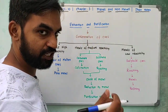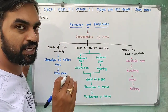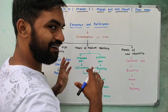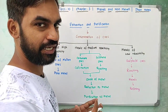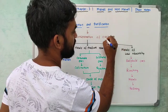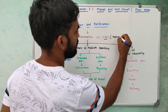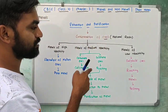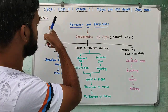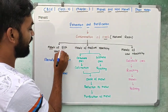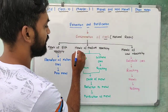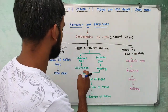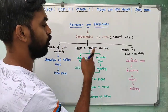Now let's look at extraction and purification of metals. Usually metals are found in natural rocks called ores. Metals are classified by reactivity: metals of high reactivity, metals of medium reactivity, and metals of low reactivity — three types.